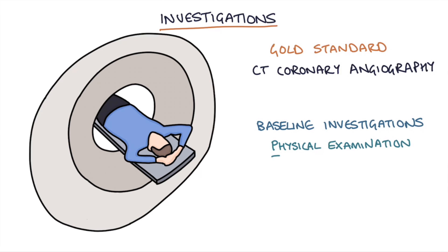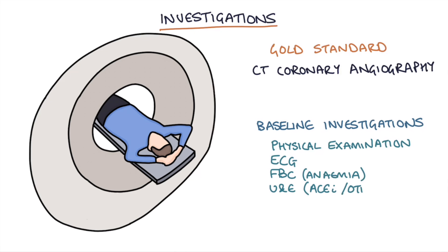It's worth doing an ECG on every patient as a baseline and to look for any old ischemic changes. Do a full blood count to look for anemia, and check urea and electrolytes (U&Es), which is useful prior to starting an ACE inhibitor. Check liver function tests, which is useful prior to starting statins.